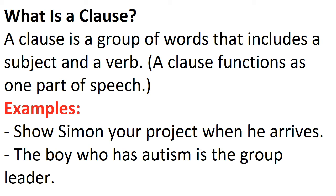The next sentence is: 'The boy who has autism is the group leader.' If we say 'has autism,' then it does not convey meaning on its own — so it is a phrase. If we say 'the boy,' that is also a phrase. If we say 'the group leader,' it is not a proper meaning either. But if we make a complete sentence, then it conveys a proper meaning.